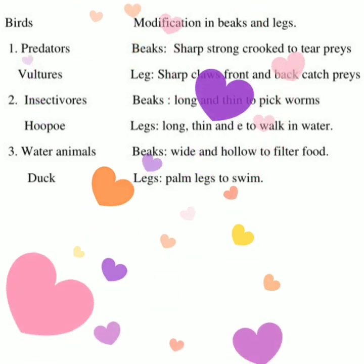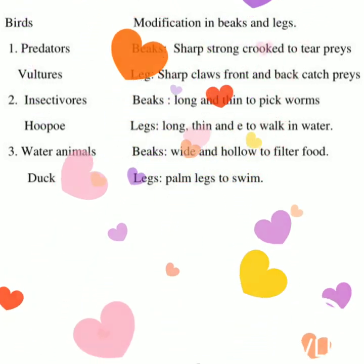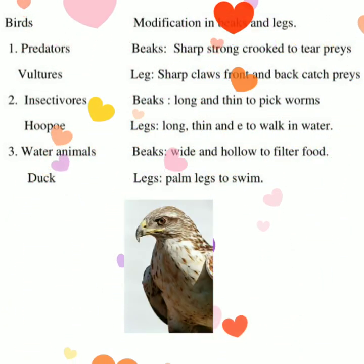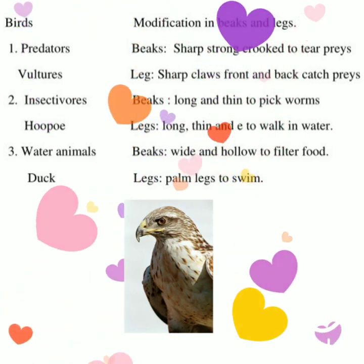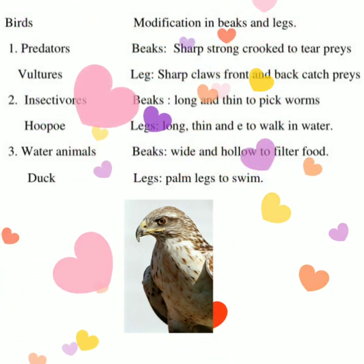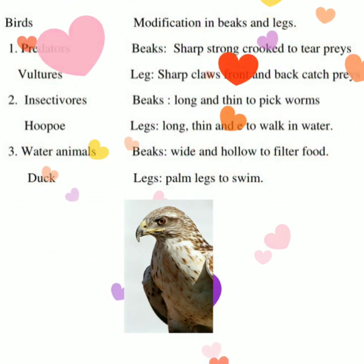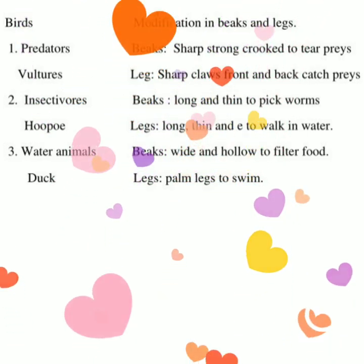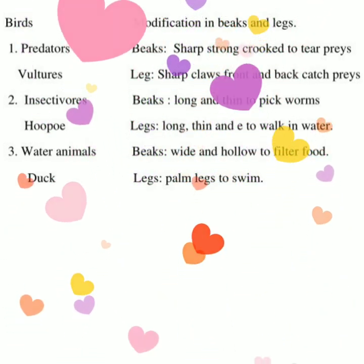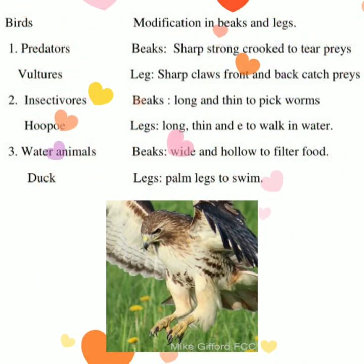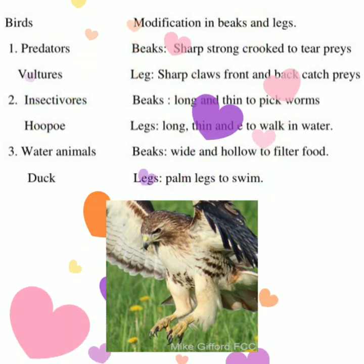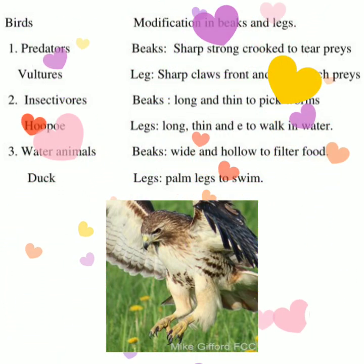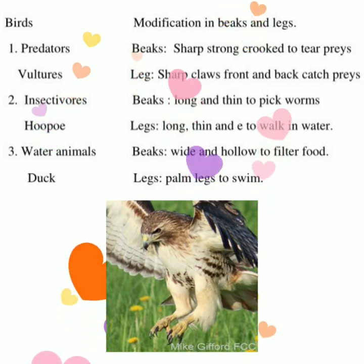Predators like vultures have beaks that are big, sharp, and hooked to tear prey. Their legs are sharp and end with sharp claws — three fingers in front and one at the back — to capture prey.